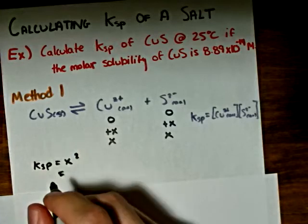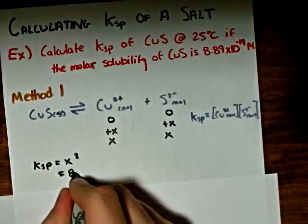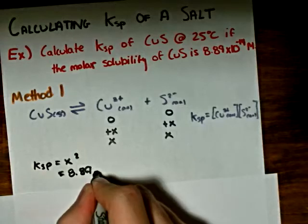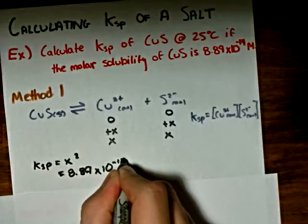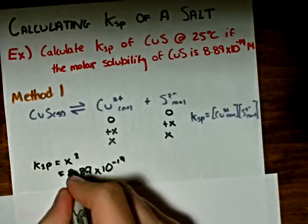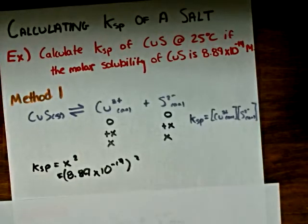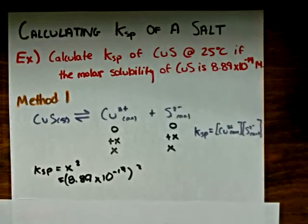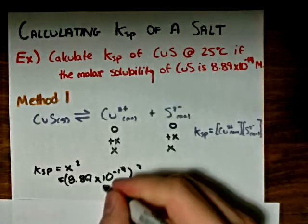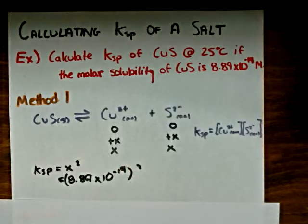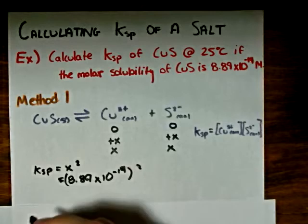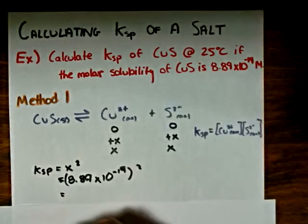Just as an added note, when we do this calculation, we know that we're going to get a very small Ksp value simply because the molar solubility is incredibly small, meaning that the left side of the equilibrium is favored very much. So that's also something to look out for.